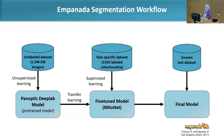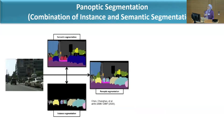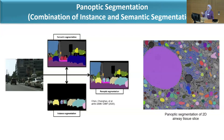Briefly on panoptic segmentation: semantic segmentation classifies classes, instance segmentation classifies individual objects, and panoptic segmentation is the combination of both, providing more detail. In our example, panoptic segmentation can classify that something is mitochondria, then distinguish mitochondria one, two, three — helping us count and analyze these objects in detail.